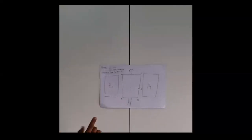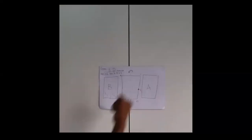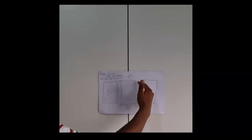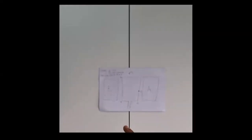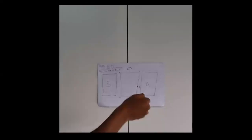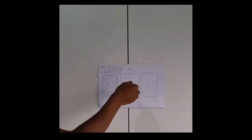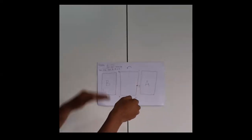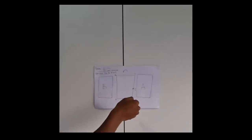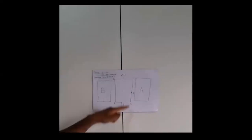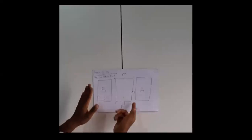The current moves from D to C — focus on side DC. This means the current is moving away from you, into the page. The middle finger points into the page. Now consider the anti-clockwise rotation: when the coil moves anti-clockwise, side DC moves upwards and side AB moves downwards.